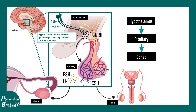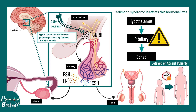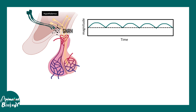Overall, GnRH modulates the hypothalamus-pituitary-gonad hormonal axis — essentially our reproductive axis. In many syndromes and medical conditions like Kallmann syndrome, this hormonal axis is defective, which leads to delayed or absent puberty. Now let us talk about the important aspect of GnRH release: GnRH is not released in a sustained fashion from GnRH neurons.